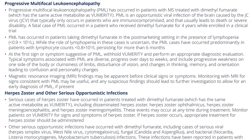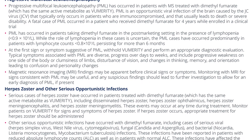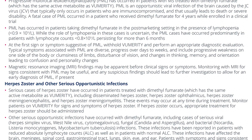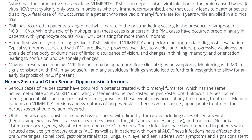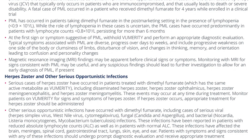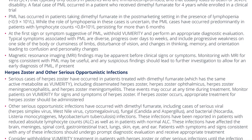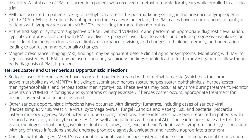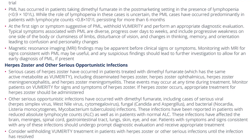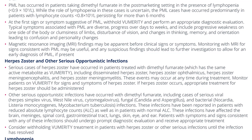Herpes zoster and other serious opportunistic infections: Serious cases of herpes zoster have occurred in patients treated with dimethyl fumarate, which has the same active metabolite as Vumerity, including disseminated herpes zoster, herpes zoster ophthalmicus, herpes zoster meningoencephalitis, and herpes zoster meningomyelitis. These events may occur at any time during treatment. Monitor patients on Vumerity for signs and symptoms of herpes zoster. If herpes zoster occurs, appropriate treatment should be administered.